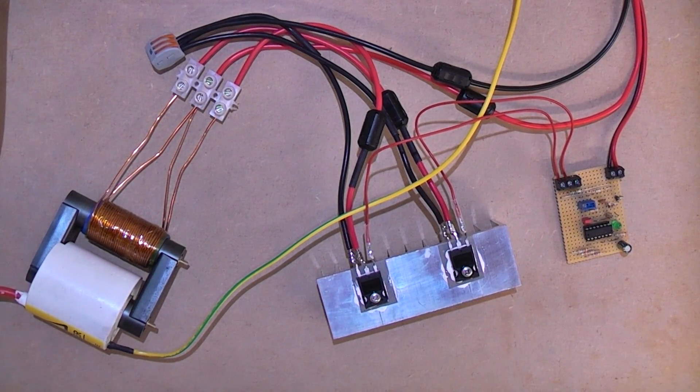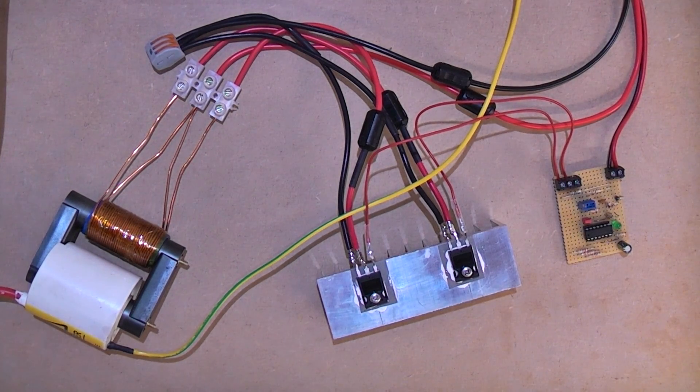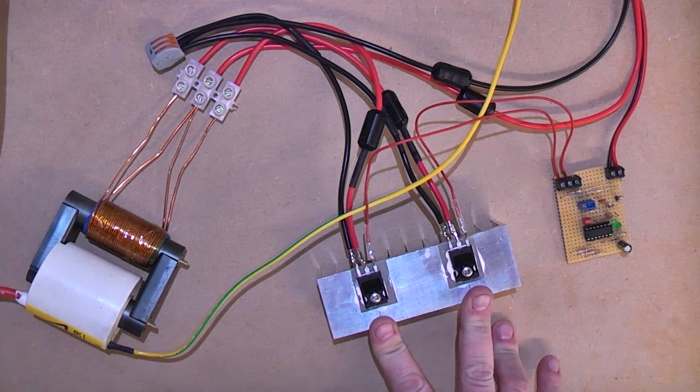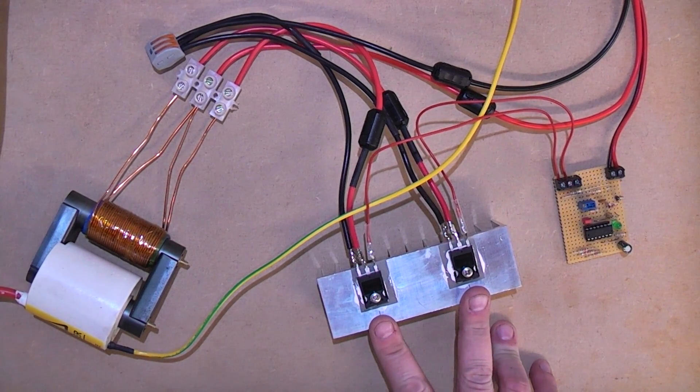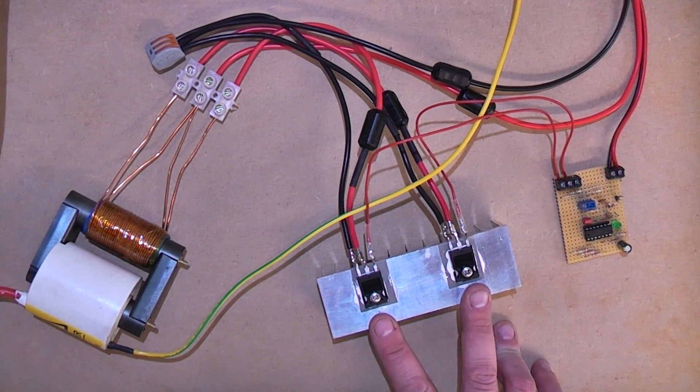I wired it up and I was using IRFB260s, they were getting too hot. So I switched to some IGBTs. I can't remember the number of them, but they're rated, I can't even read the number on them, rated at 600 volts, 53 amp continuous drain current at about 20 degrees Celsius.